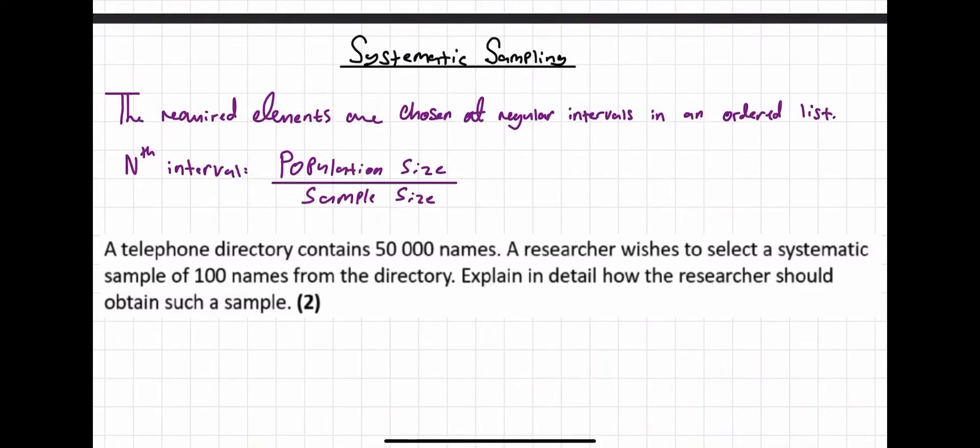Okay, a systematic sample is quite a quick method. This is where the required elements are chosen at regular intervals in an ordered list.